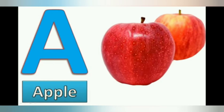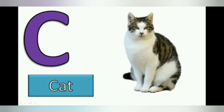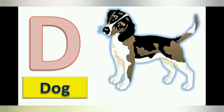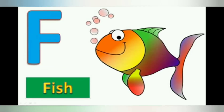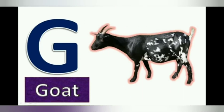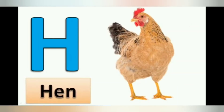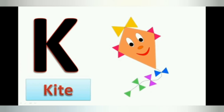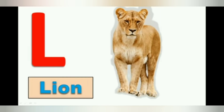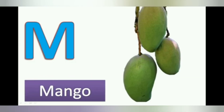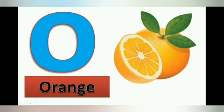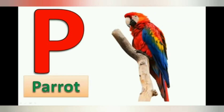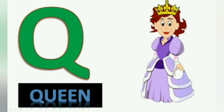Now revise. A for apple. B for ball. C for cat. D for dog. E for elephant. F for fish. G for goat. H for hen. I for ice cream. J for jug. K for kite. L for lion. M for mango. N for nest. O for orange. P for parrot.